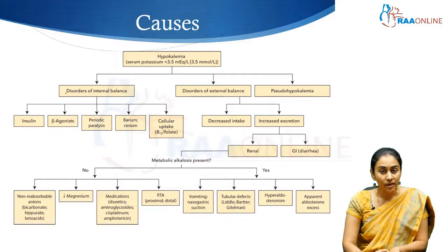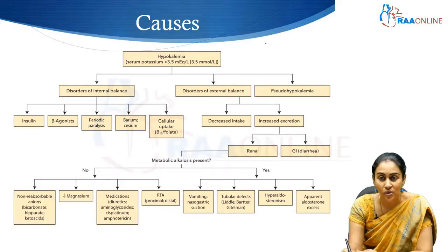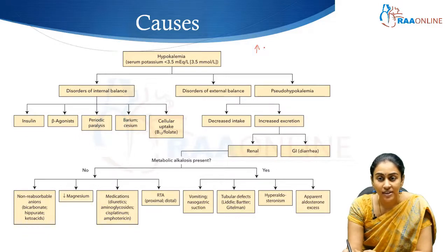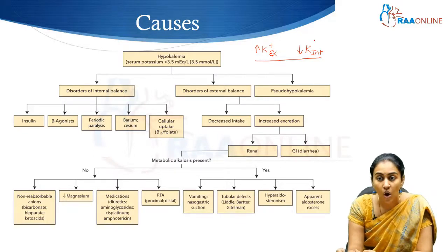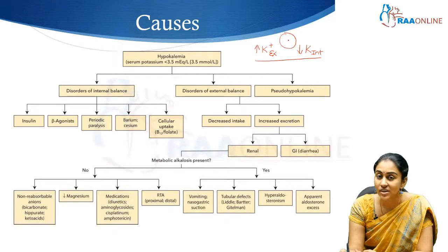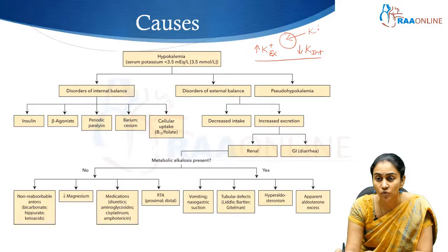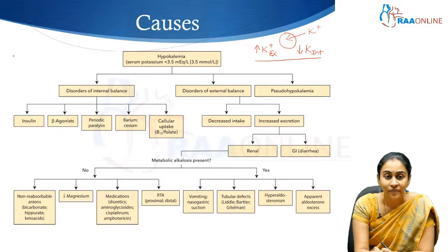Now let us learn about the various causes of hypokalemia. For an electrolyte to be low, there must be either increased excretion or decreased intake. Similarly, hypokalemia may be caused by increased renal potassium excretion or decreased potassium intake. Between these two major causes there is a third important cause: transcellular shift — any factor that promotes movement of potassium ions intracellularly will contribute to hypokalemia.